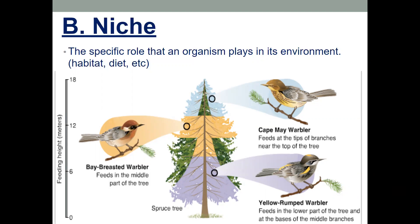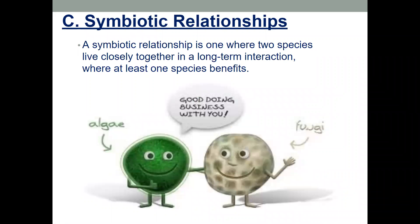Different types of birds — oystercatchers, avocets, cranes, and flamingos — are all examples of niches because they feed differently. Flamingos can go deeper into water and access different food sources than ducks, while oystercatchers and plovers live in the same environment but have different niches, reducing competition. Now, a symbiotic relationship is a relationship where two species live closely together in a long-term interaction where at least one benefits.